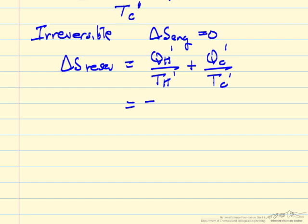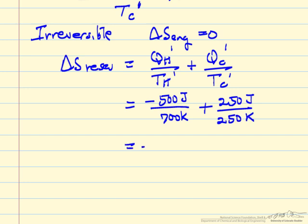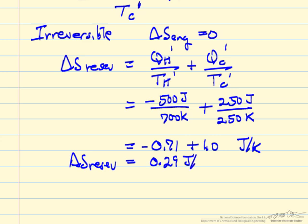So QH minus 500 joules, high temperature reservoir is 700 K, QC is positive, and the temperature for the low temperature reservoir 250 K. So this is minus 0.71 plus 1.0 joules per Kelvin. So delta S for the reservoirs is 0.29 joules per Kelvin. This is positive. Delta S for the engine is zero because it's running around in a cycle.